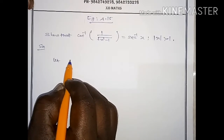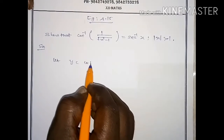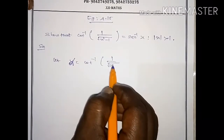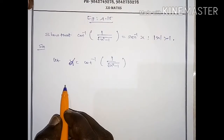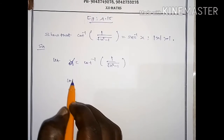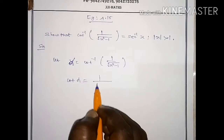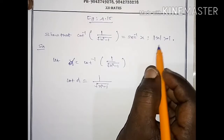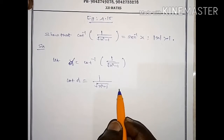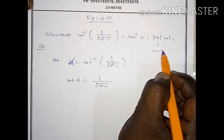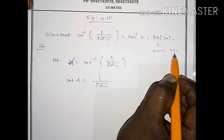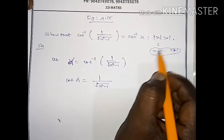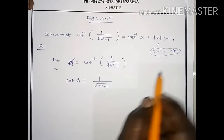Let y, meaning alpha, equal to cot inverse of 1 by root of x squared minus 1. The domain condition is: x is less than minus 1 or x is greater than or equal to 1, as per the formula rule.